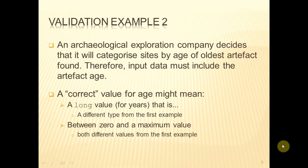A second example: an archaeological exploration company decides that it will categorise sites by age of oldest artefact found. Therefore, input data is going to have to include artefact age. This time we're inputting age, but it represents a completely different kind of age. If we're going to record the number of years for archaeological or geological stuff, then age is likely to be very large, and therefore we might have to record it as a long value instead of an integer value. That differs from the first example by data type, and the range of permitted values will start at zero instead of one, and go up to some maximum value much greater than 130 or 150.